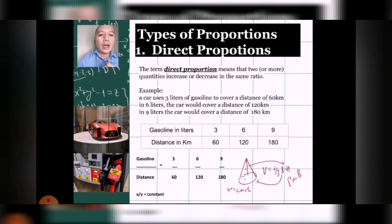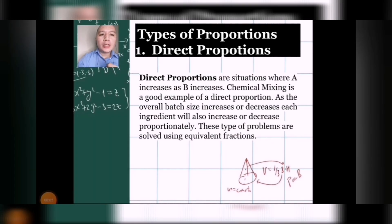Take note that the gasoline is in the form of liters and then distance is in kilometers. Now, since the gasoline is increasing in amount, it also means that the distance that we can cover would also increase. Thus, the term direct proportion is perfectly applicable. So, direct proportions are situations where A increases as B increases. Chemical mixing is a good example of a direct proportion as the overall batch size increases or decreases each ingredient. It will also increase or decrease proportionately. These types of problems are solved using equivalent.